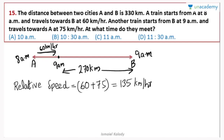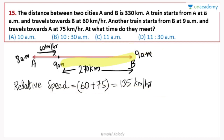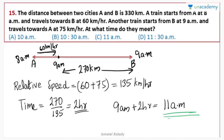Since the trains are moving in opposite directions, the relative speed is 60 plus 75, which equals 135 km per hour. The remaining distance is 270 km. Time to meet equals 270 divided by 135, which equals 2 hours.